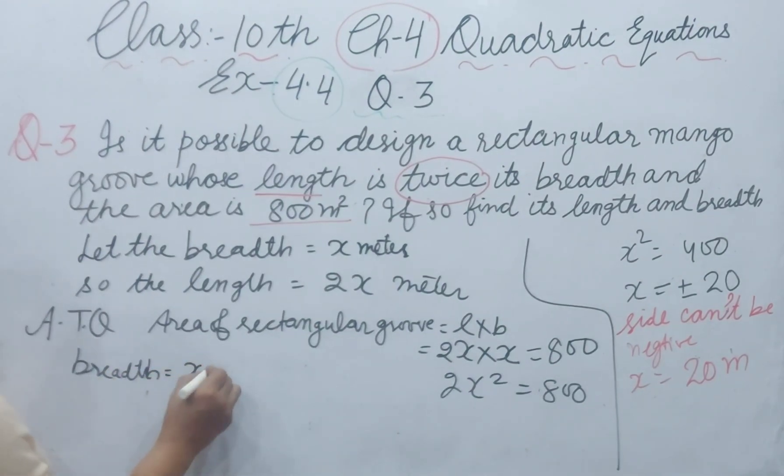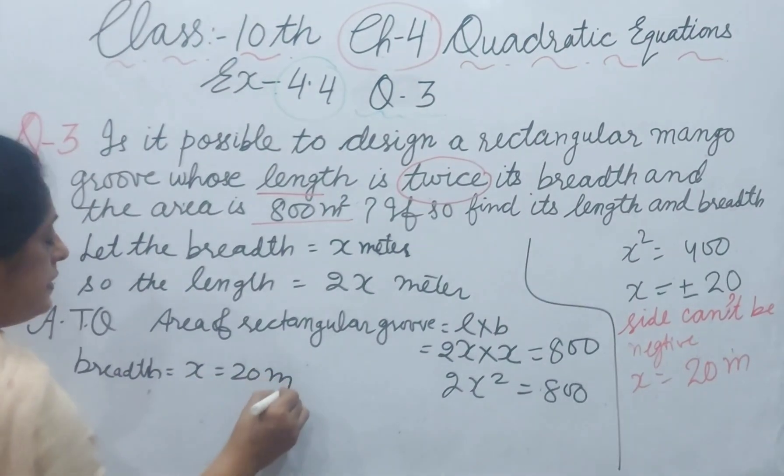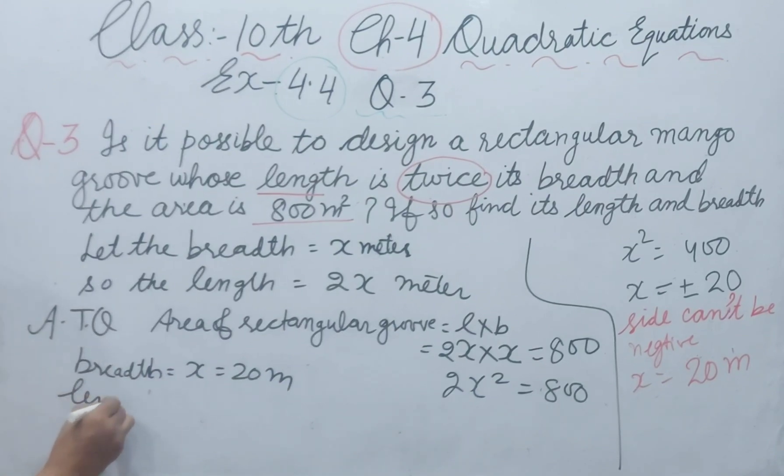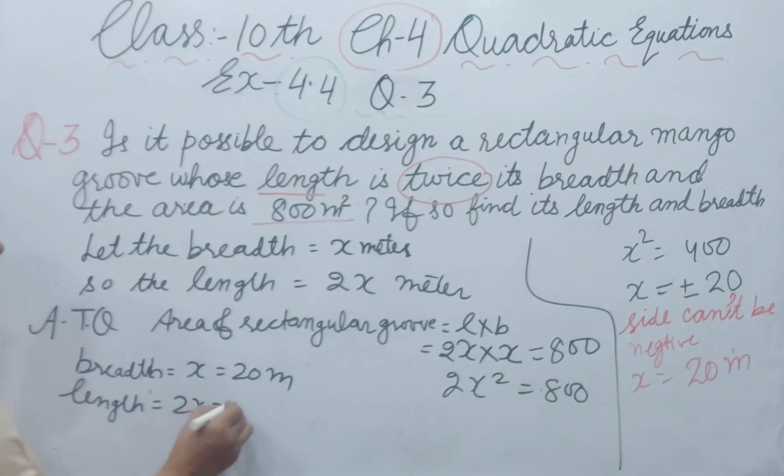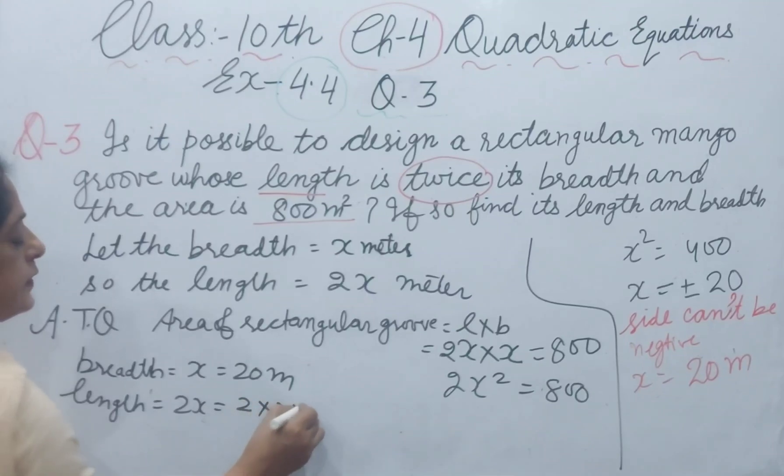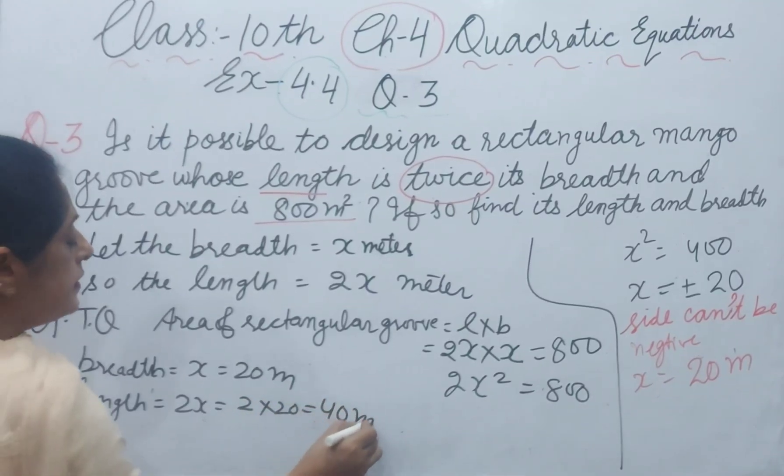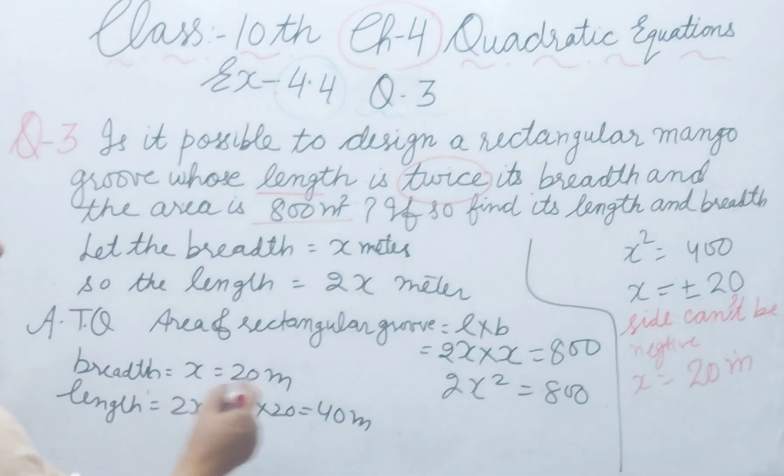Breadth is x, which is 20 meter. So length is 2x: 2 multiplied by 20 equals 40 meter. And the answer will be 20 and 40 meter.